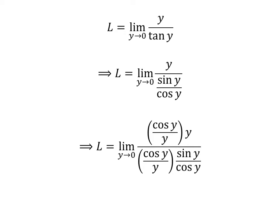As multiplying the numerator and denominator of a fraction by a common factor does not change the value of the fraction, let us multiply the numerator and denominator by the common factor cosine of y upon y.